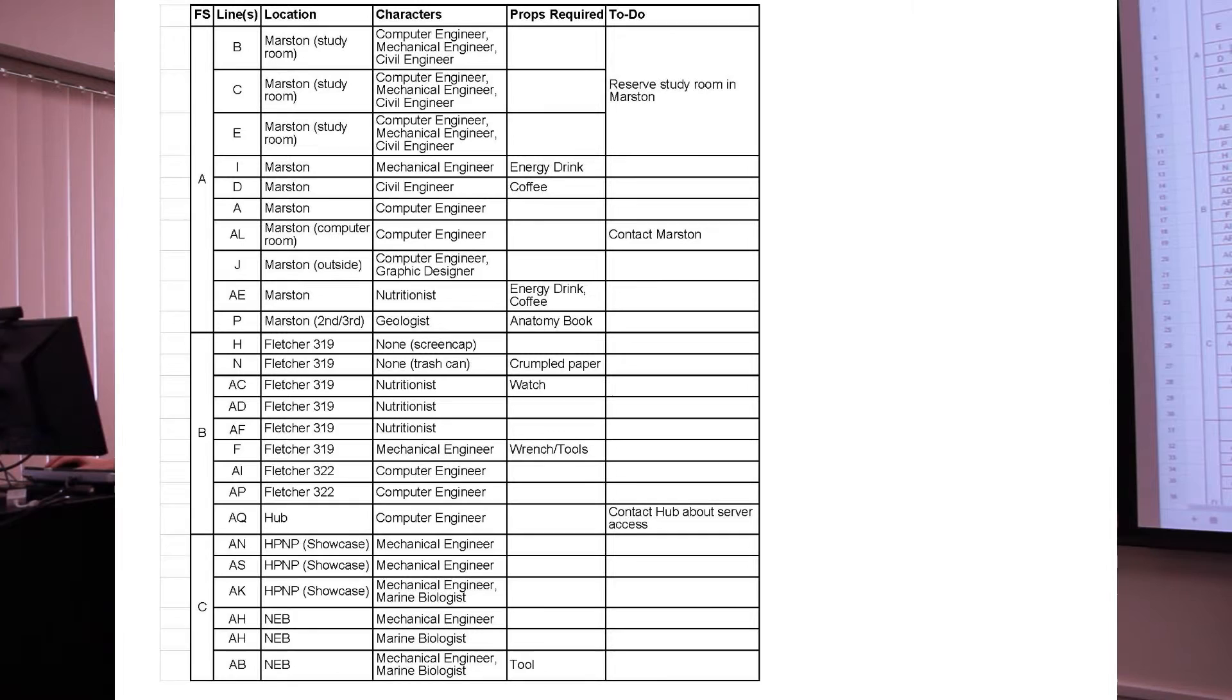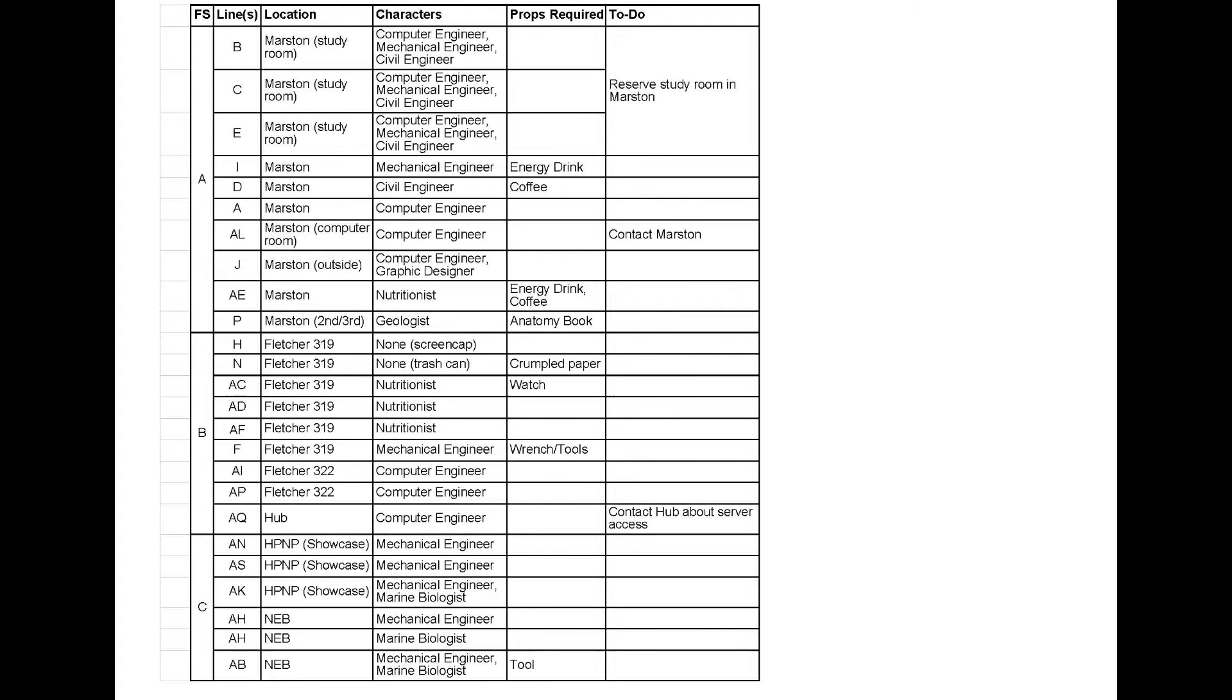It's not. This one's mine. So this is the film session planning document for the E-Week video. You'll see we have seven film sessions labeled A through G. And we have basically a location, what lines of the script they are, and the characters involved in them. This is how we try to minimize who was in what.